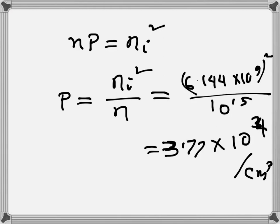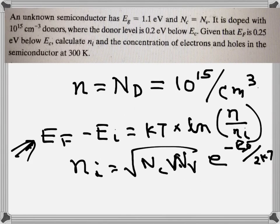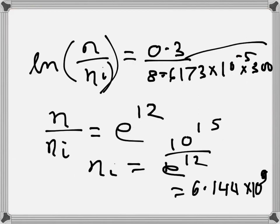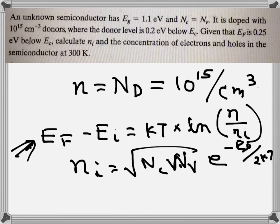So we can draw the band diagram. Though we are not asked to, but everything is given. EG is equal to 1.1, and then dopant ND is equal to 0.2 electron volts below EC, and EF is equal to 0.25 below EC.